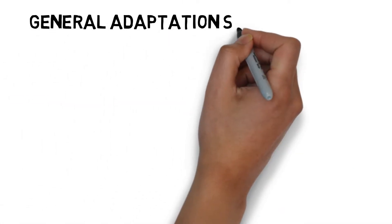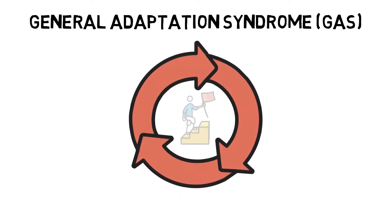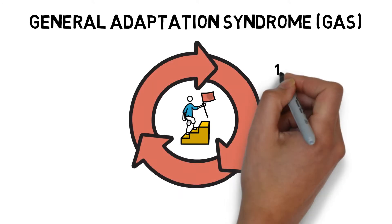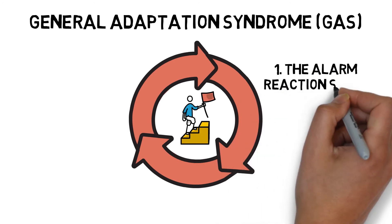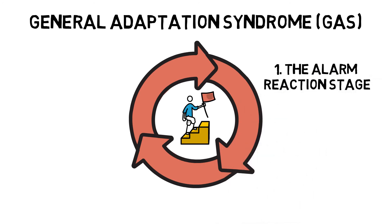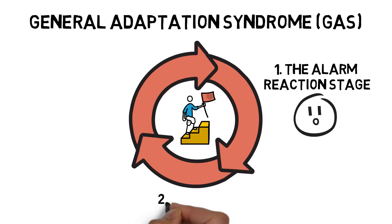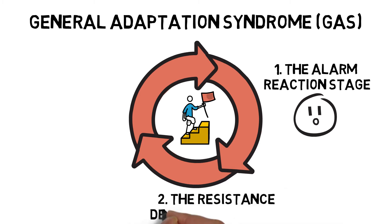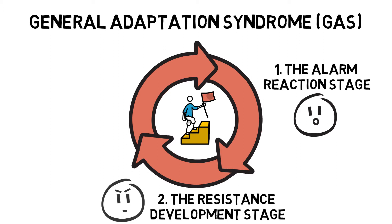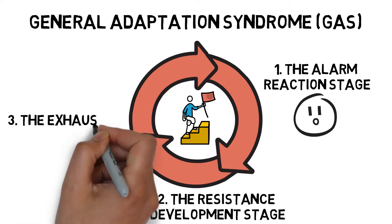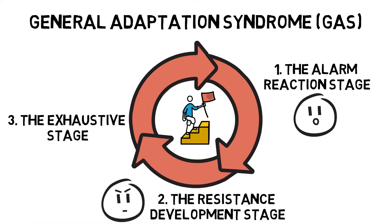The general adaptation syndrome is how the body responds and adapts to stress. The alarm reaction stage is the initial reaction to the stressor. The resistance development stage is when the body adapts in order to resist the stress more efficiently. And the exhaustive stage is when persistent application of stress will exhaust or distress the system.